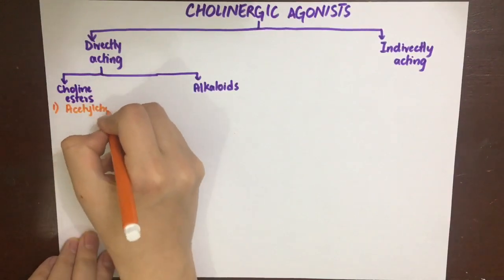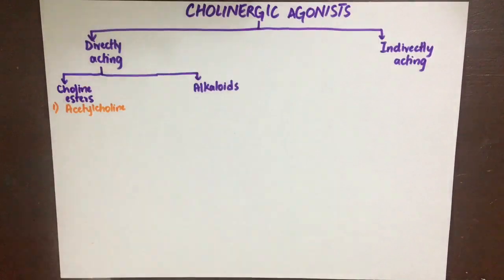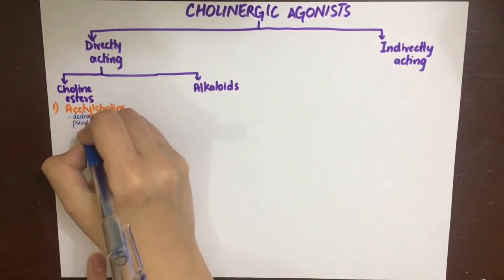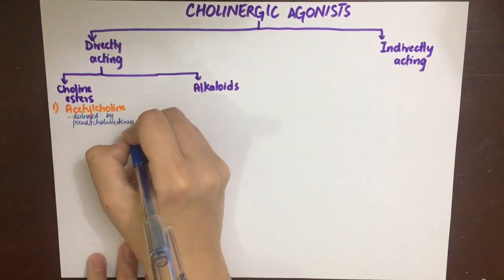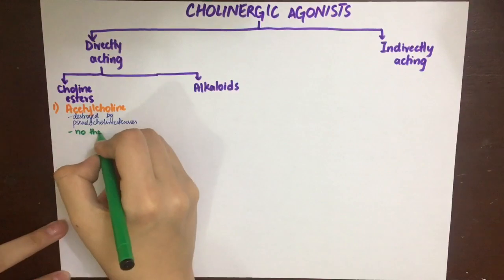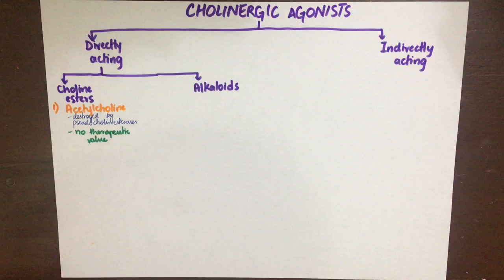The choline esters include acetylcholine, but acetylcholine itself has no therapeutic value because it is degraded by both synaptic acetylcholinesterases and pseudocholinesterases present in the plasma. That's why we cannot use acetylcholine as a drug. Although if given systemically, it will cause hypotension due to its action on M3 receptors of the endothelium of the blood vessels.